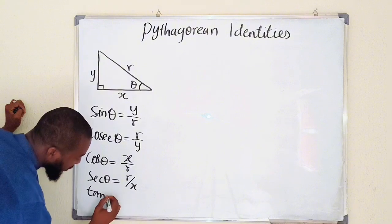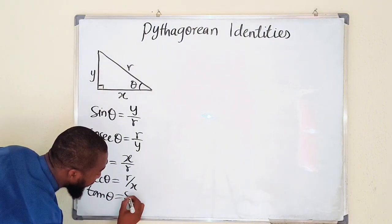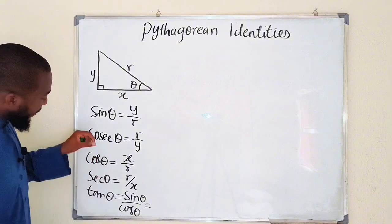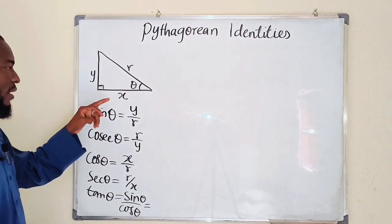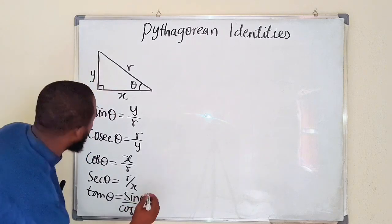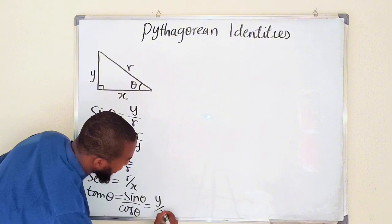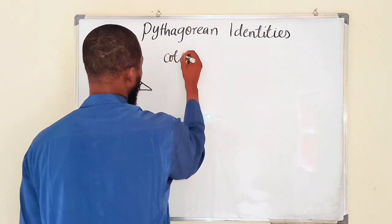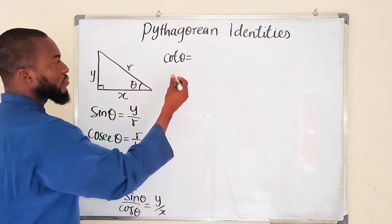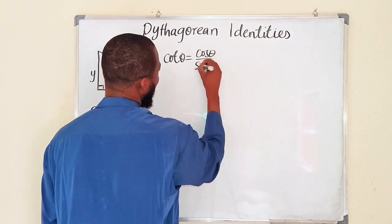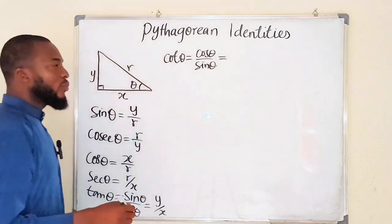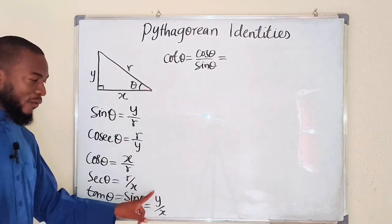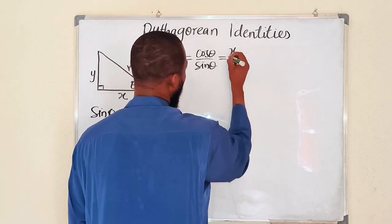Then we go to tangent. We can write tangent as sine divided by cosine. You can take opposite divided by the adjacent, which is y divided by x. Its reciprocal is cotangent theta — remember it is cosine theta divided by sine theta, or simply the reciprocal of tangent — which gives us cosine over sine, or x over y.